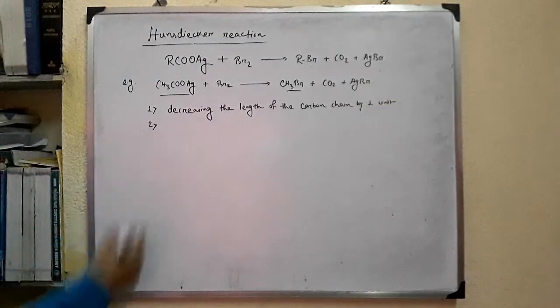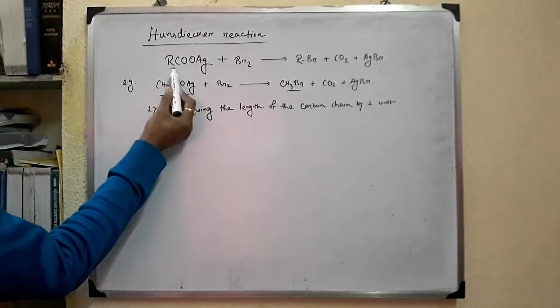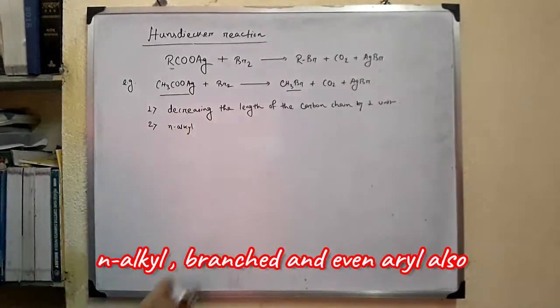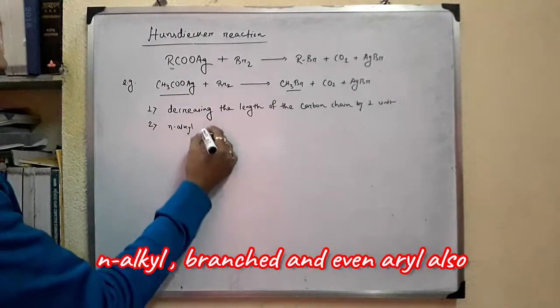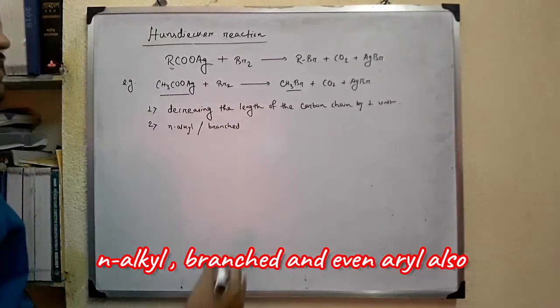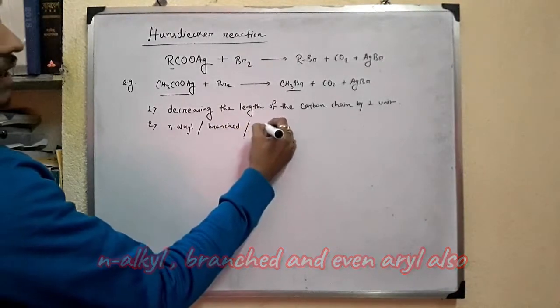Point number 2: This R may be alkyl and it may be branched, even aryl also.